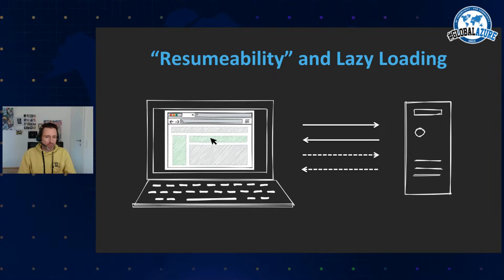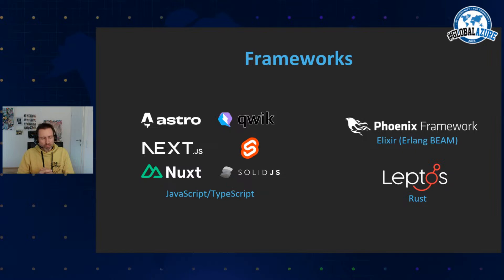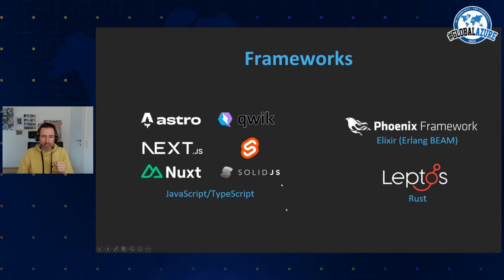Now let's look at the frameworks available in this landscape. Most are in the JavaScript/TypeScript area: Astro, Qwik, Next.js, SvelteKit, Nuxt, Solid.js. Next.js is one of the most well-known frameworks, though it's a bit older, so some newer patterns are only available in other frameworks. There are also other options — for example, Phoenix with LiveView on the Elixir/BEAM VM, which codes everything in the backend with just a small JavaScript library fetching from it.